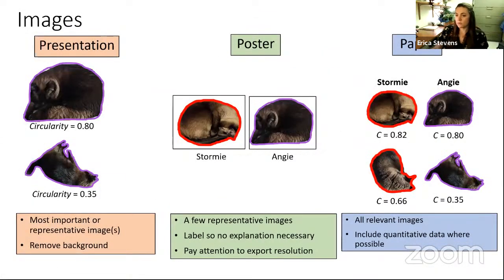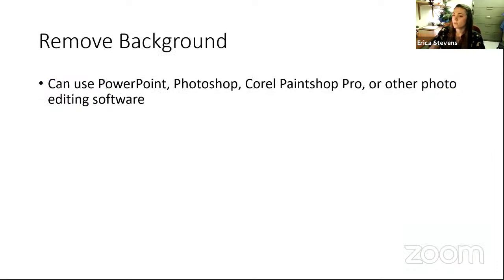For strictly images, pare down the images for the presentation. Make sure you're showing either the most important or the most representative image or images. Again, if you're not overwhelming and remove the background on those, and I'll show very quickly how to do that in PowerPoint because I've met a few people who are not sure how to do that. For a poster, you can add a few more representative images so that it draws attention, but label them so that you don't have to explain. So in the presentation, I could explain this is Angie's most circular image. This is Angie's least circular image, whereas for the poster, I'm not necessarily going to be right there explaining it. And pay attention to export resolution, which I'll also mention briefly for PowerPoint on one of the next slides. For paper, you want to include more images and that's all of the relevant images, including the quantitative data within the image wherever that is possible. So for this one, including that circularity right next to that image.